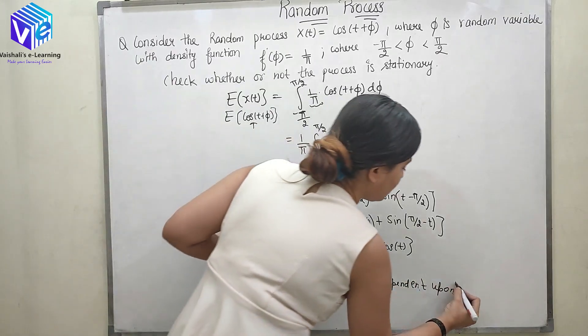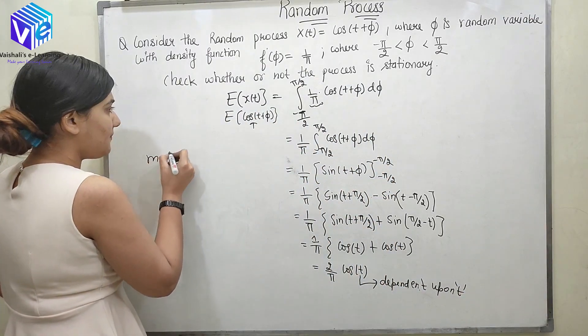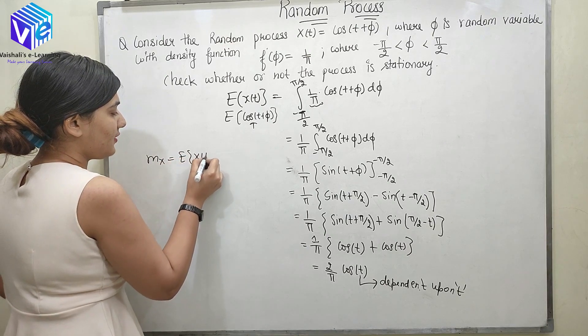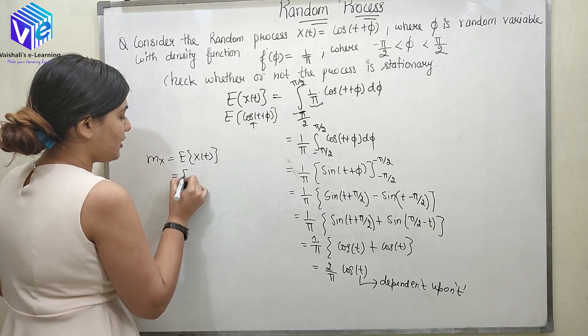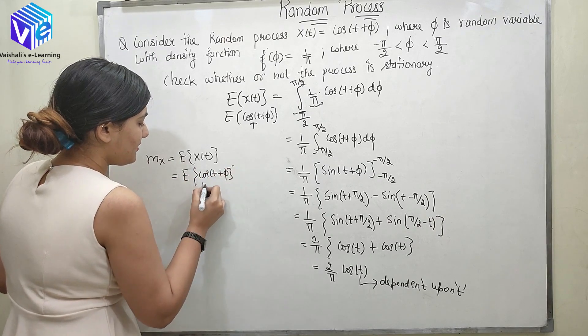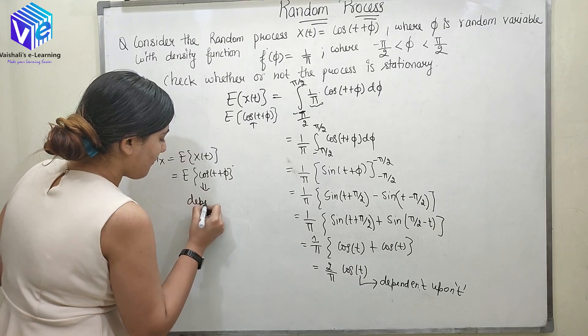Now I can say mean = E[X(t)] = E[cos(t + φ)] is dependent upon t.